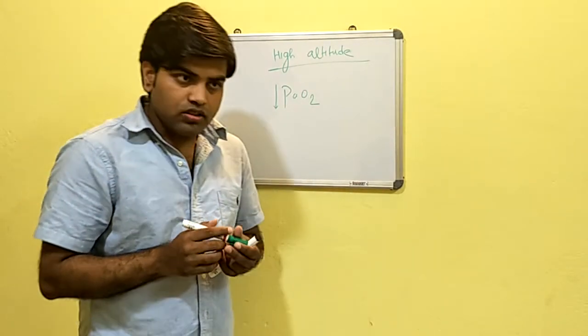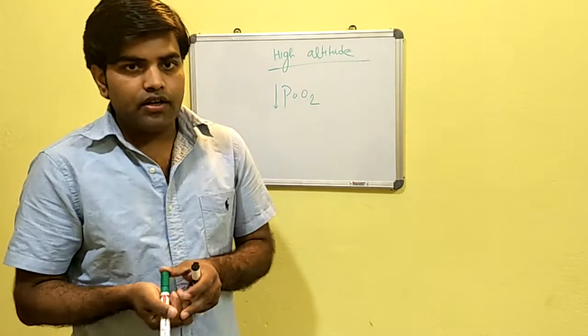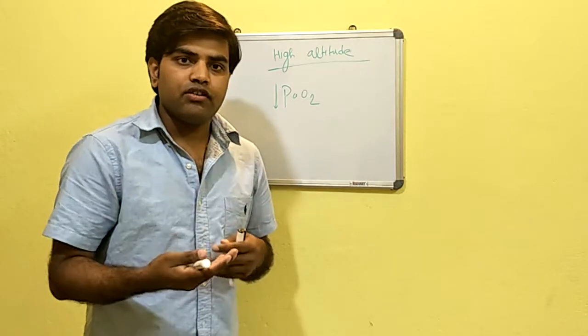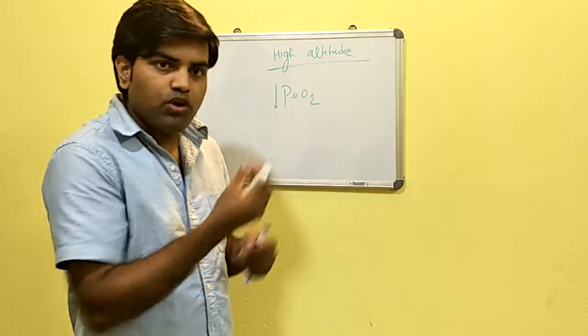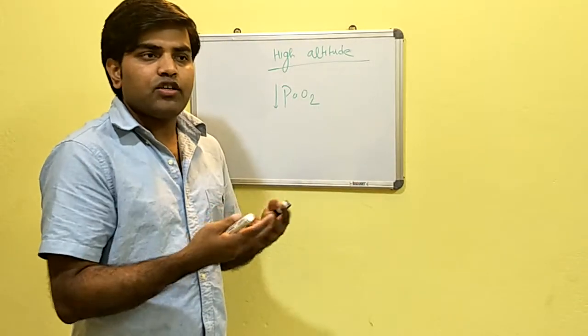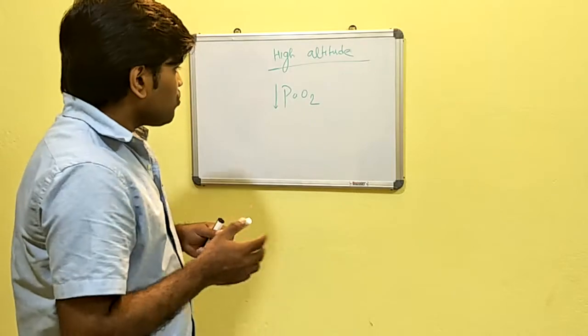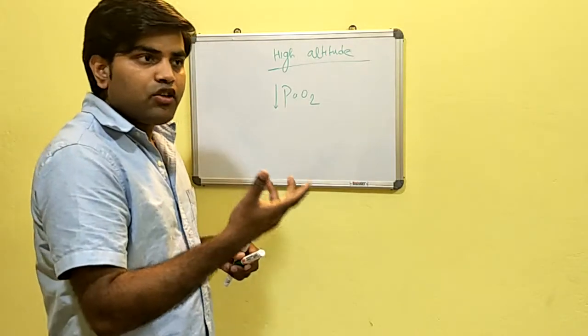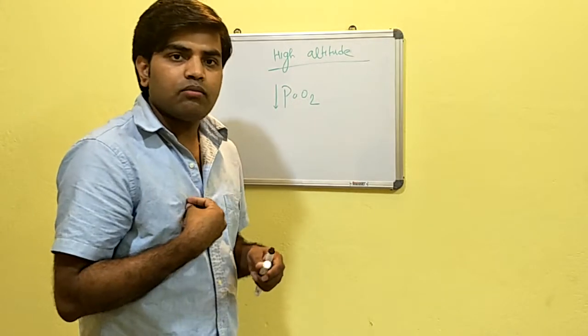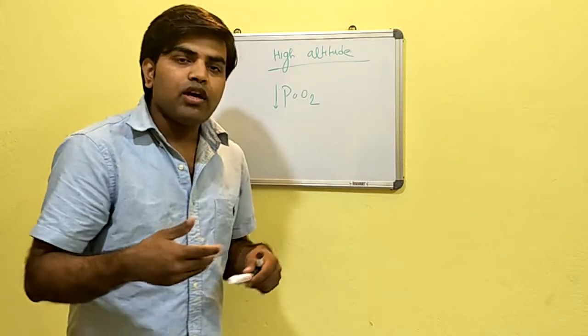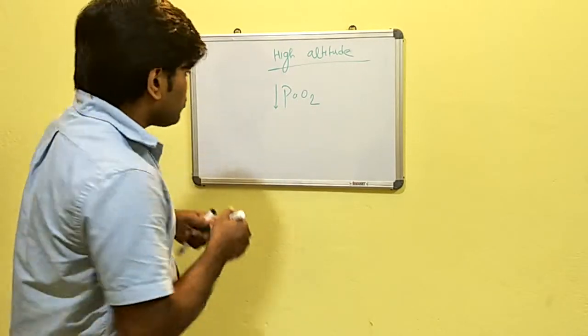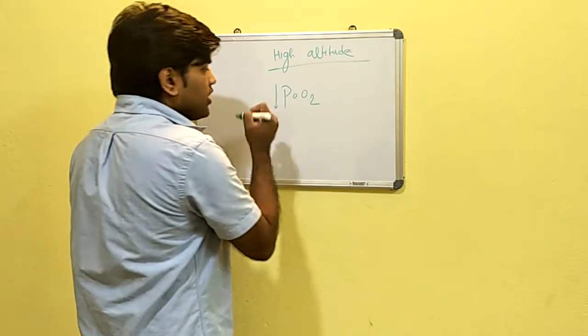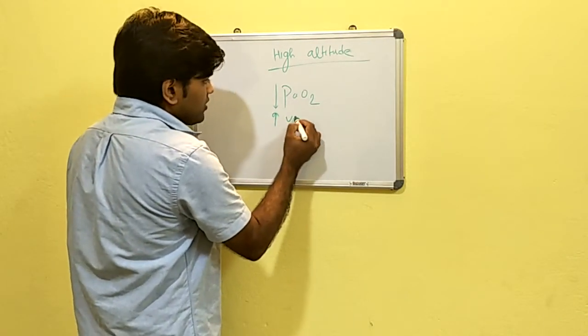Since there is decrease in oxygen in our blood, now body will try to compensate. For compensation, the body will hyperventilate in search of more oxygen. So when we are hyperventilating, there will be more oxygen intake, but instead of that, we are excreting out more carbon dioxide. There was a decrease in oxygen content in the blood, so ventilation has increased.